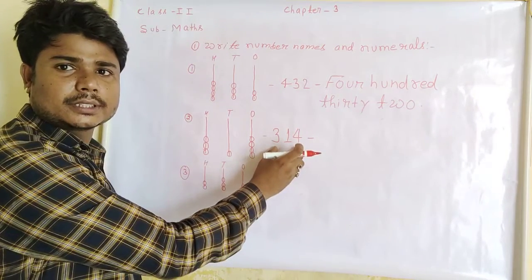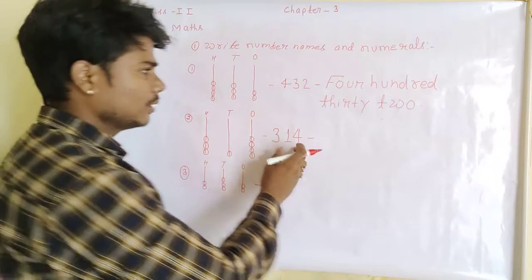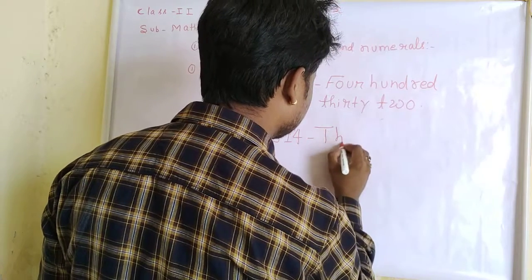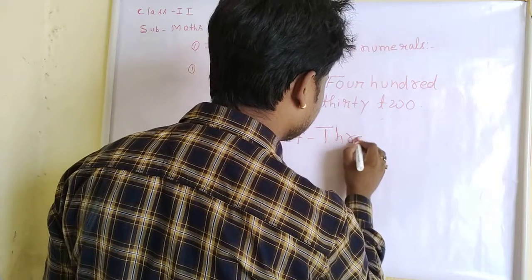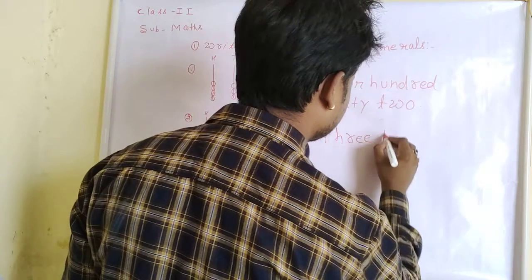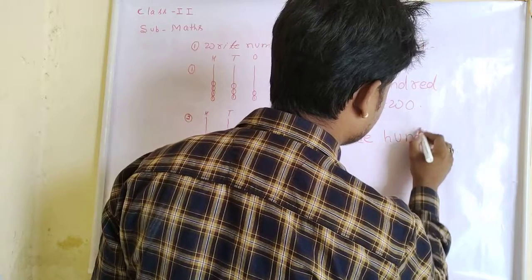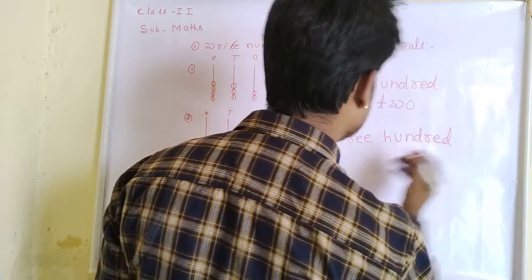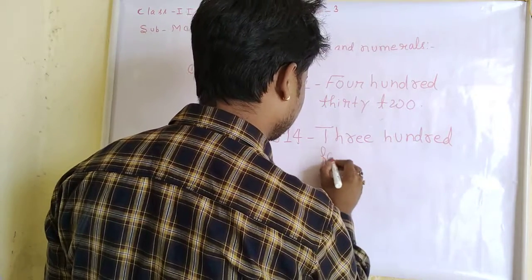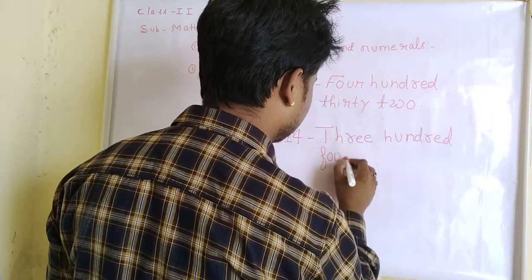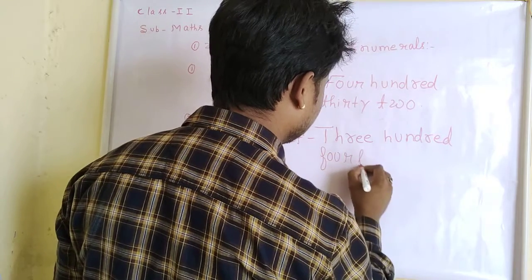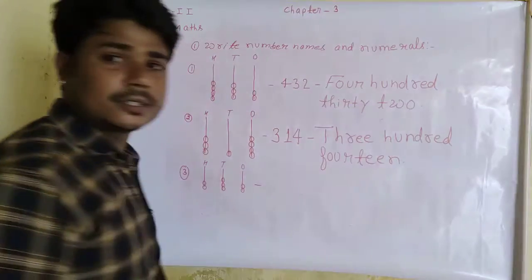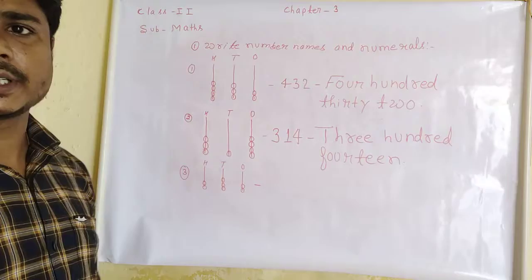So this number is 314. We have to write the number name: three hundred fourteen. This is your second answer.